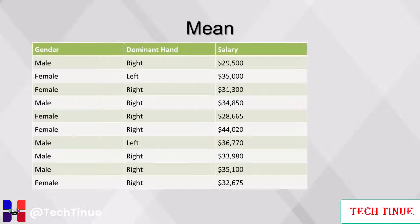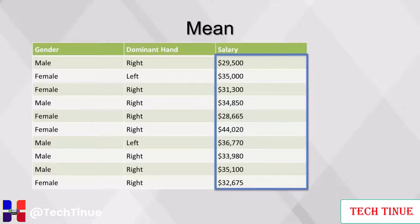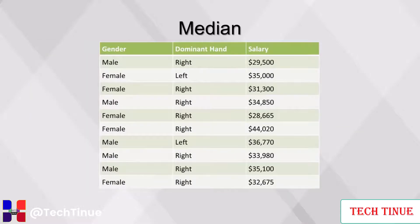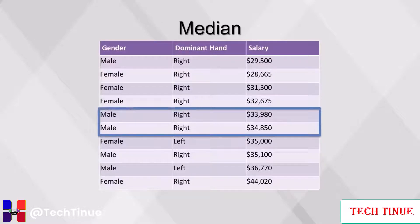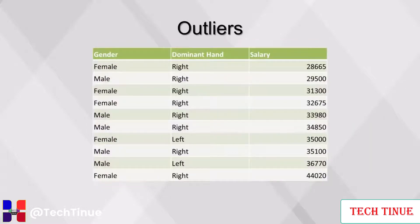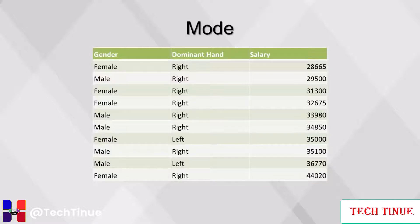To find the mean or average, add up all the numbers and divide by the number of rows. $341,860 divided by 10 equals a mean of $34,186. To find the median, sort the numbers and find the middle value. If there are an even number of rows, there are two middle values, and the median is the average of these two. Here we sort by salary, then find the average of the two middle values: ($33,980 + $34,850) / 2 = $34,145. Values that fall outside of the normal range of the rest of the observations are called outliers — in our example, $44,020 is an outlier. The mode is the most commonly occurring value; in our sample dataset, no values occur more than once, so there is no mode.